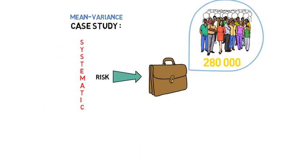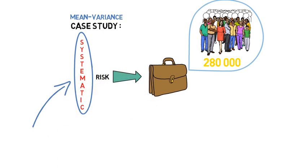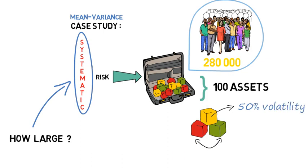Now let's pose the following question. How large is the amount of systematic risk if we were to assume that the tangency portfolio consists of 100 assets that each have a 50% volatility and a 0.4 correlation with all the other assets?